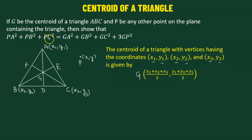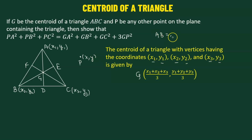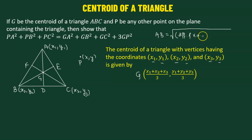Now, in order to show that the given expression is true, we'll first find the lengths PA, PB, and PC using the distance formula. The distance formula states that for two points A and P, the distance is given by the square root of the difference of the x-coordinates squared, added to the square of the difference of the y-coordinates.